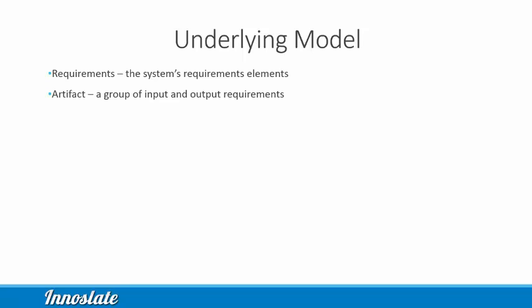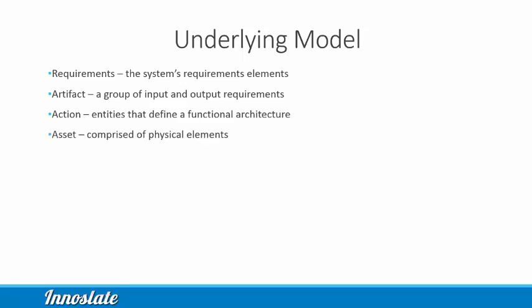The input and output requirements are grouped into an artifact entity, such as a document. Next, we have to get some sense of what our system is going to do. To model the capability of our system, we use action entities to define a functional architecture. For instance, we might want to design a system to perform the action drive vehicle. Once we decide what our system will do, we need to be able to implement the capability. The physical implementation of our architecture is comprised of physical elements — hardware, software, or even human elements. In Innislate, we call these asset entities. For example, an Autonomous Vehicle asset might be used to perform the action drive vehicle.